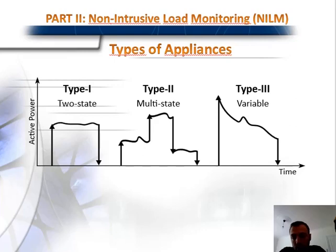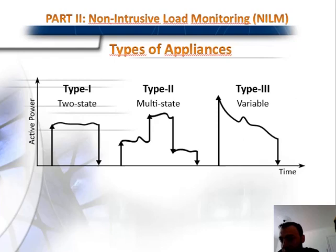To address the NILM problem, appliances need to be classified. As shown in the figure, we classify them into three types. Type 1 appliances have only two states — on and off — and consume constant energy during that period, for example toasters and kettles. Type 2 appliances have multiple states with varying energy consumption depending on the state, for example a washing machine with washing and drying cycles. Type 3 has variable consumption that is not systematically addressed, such as a drill whose energy consumption is always variable based on consumer behavior.